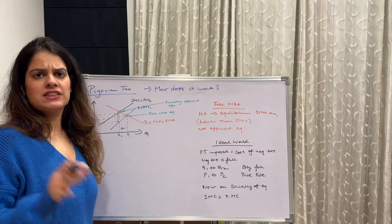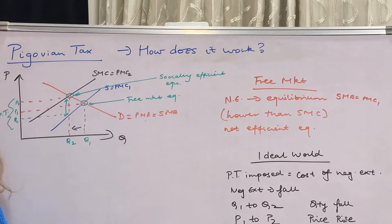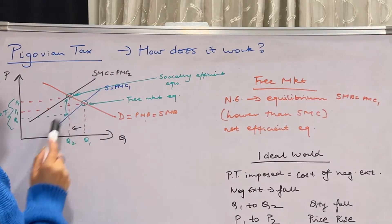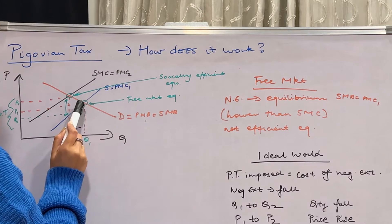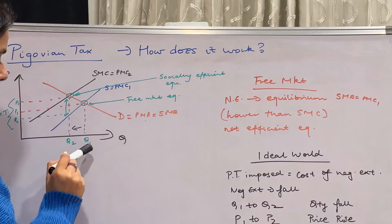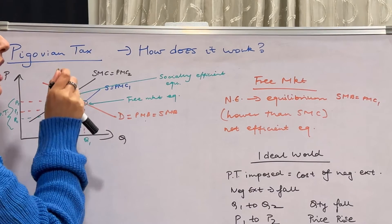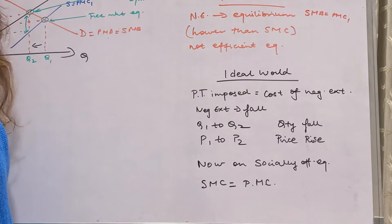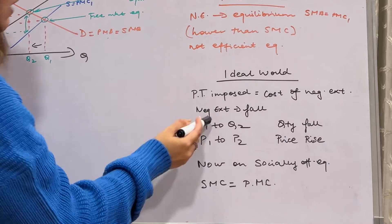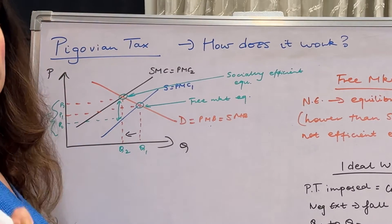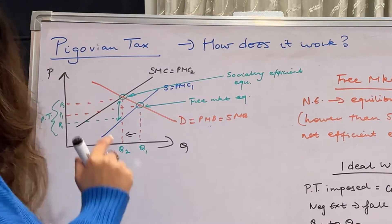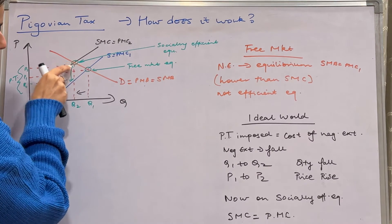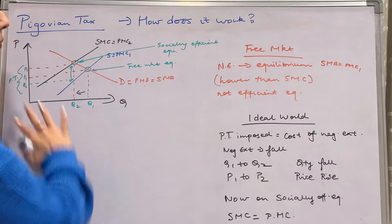Moving ahead to the diagram — it's very simple, just follow me. We are examining two conditions. First, the free market condition, where the negative externality establishes an equilibrium at SMB equals PMC. This free market equilibrium is lower than the SMC — at this point we have quantity Q1 and price P1, which is not an efficient equilibrium because of the externality. In the ideal world, a Pigovian tax is imposed equal to the cost of the negative externality to bring in equilibrium. The externality falls, quantity falls from Q1 to Q2, and price rises from P1 to P2 because of the Pigovian tax. Now we are at the socially efficient equilibrium, where SMC — social marginal cost — equals private marginal cost.